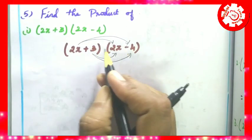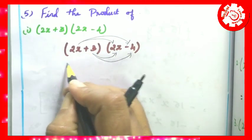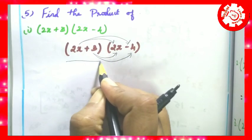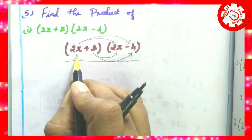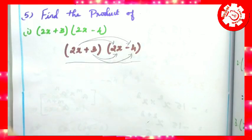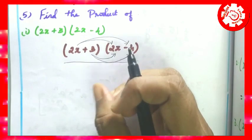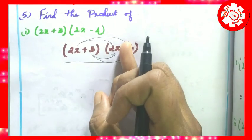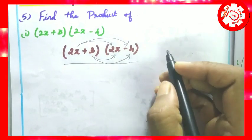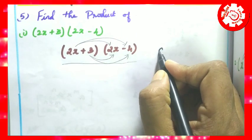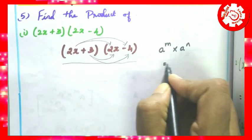So 2x plus 3 into 2x minus 4 — we will add using the procedure. For a single term, we will learn the product of monomials. The first step: multiply the signs, then multiply the constants, then multiply the variables with the same base. We will apply the product rule: a to the power m into a to the power n equals a to the power m plus n.